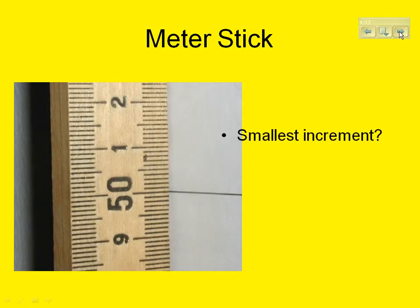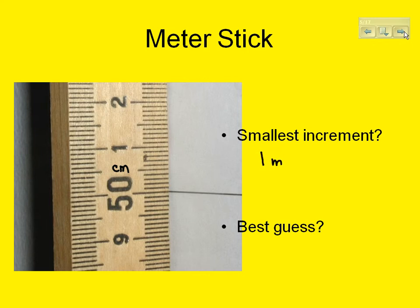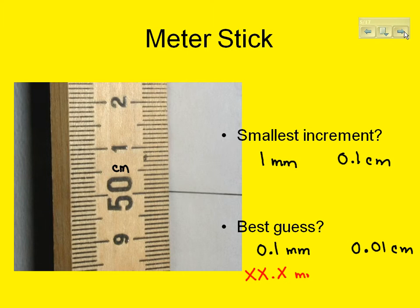Let's look at a meter stick. What's the smallest increment on the meter stick? What's your best guess for a measurement? This is the halfway point on the meter stick, so this is 50 centimeters. The smallest increment is just like the centimeter ruler — it's 1 millimeter or 0.1 centimeters. Your best guess will be 0.1 millimeters or 0.01 centimeters. When using a meter stick, your measurements should be recorded to one decimal place when in millimeters and to two decimal places when using centimeters.